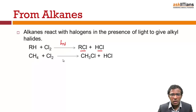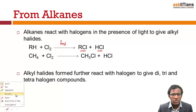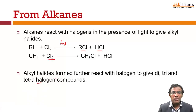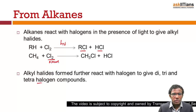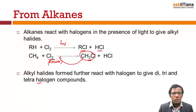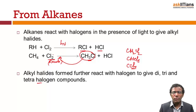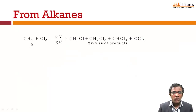Alkyl halides further react with halogens to give di-, tri-, and tetra-halogen compounds. If chlorine is taken in excess, methane reacts with some chlorine to produce methyl chloride, which again reacts with remaining chlorine. This methyl chloride reacts with more chlorine to produce CH₂Cl₂; further reaction gives CHCl₃, and that may further produce CCl₄, depending on the amount of chlorine taken. So with excess chlorine, you get a mixture of all four products.